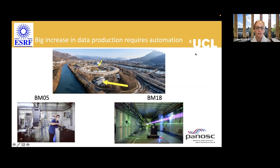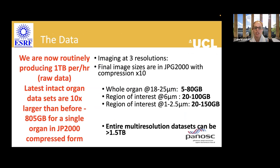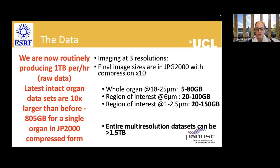Recently there has been a big increase in data production. Moving from beamline BM05 to BM18 — which is becoming fully commissioned — has hugely increased the speed of data production. We are now routinely producing a terabyte an hour of raw data. Our latest whole organ datasets are 10 times larger than before — 805 gigabytes for a single organ in JPEG 2000 compressed form.